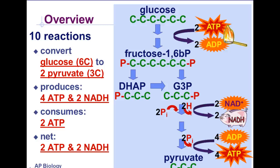Now let's look at glycolysis in terms of what it produces and how much energy is required and generated. The 6-carbon glucose molecule is converted to two 3-carbon pyruvate molecules, which produces four ATP molecules and two NADH molecules. Also write that this glycolysis process costs the cell two ATPs.